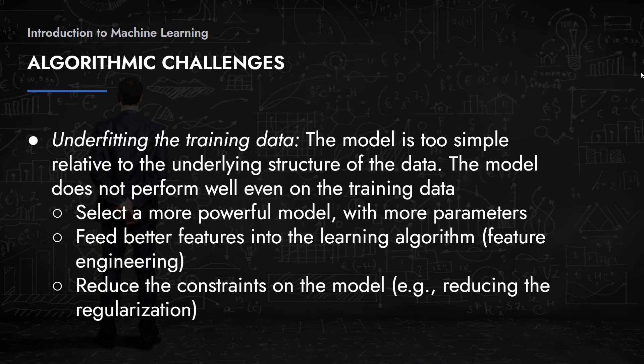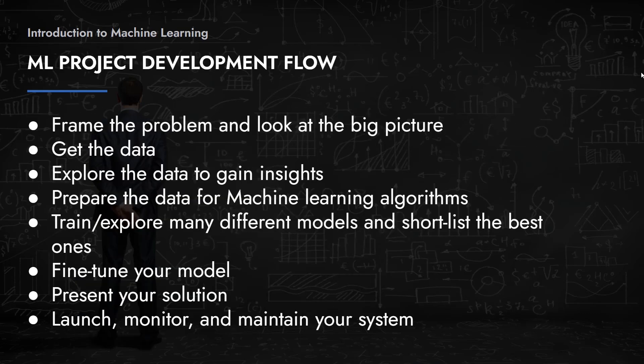A typical machine learning project development flow looks like the following. First, you frame the problem and look at the big picture — that's very important before getting into details. Then you get the data you need, which is sometimes given to you and sometimes you have to find it. Then you sit down and explore that data to gain insights: which features are important, which can be removed, and what might be missing from the dataset. This is also where you get ready for pre-processing.